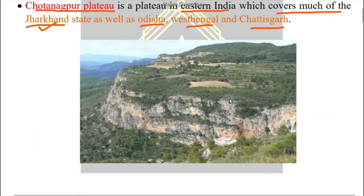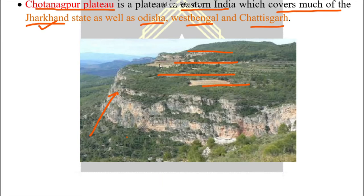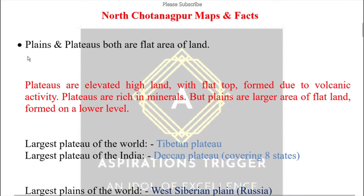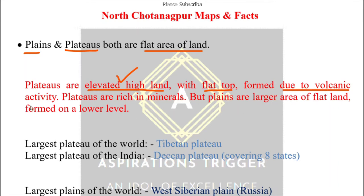Let me explain a plateau (pathar). A plateau is a samtal (flat) elevated highland — it is land that is raised up from the ground but is flat on top, like a table in your home. A plateau is a flat elevated highland that rises above its surroundings. Plateaus are very rich in minerals; you can graze animals there but farming is not done. Plains and plateaus are both flat areas, but a plateau is an elevated highland — raised from the ground with a flat top. Plateaus are basically formed due to volcanic activity.